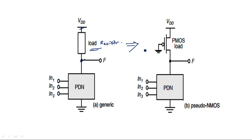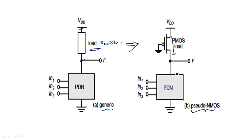This load resistor can be replaced by a transistor — an NMOS transistor with input VDD, a PMOS transistor with input 0, or any depletion mode transistor. One key requirement is that the transistor connected as a load must always be in the on state, operating in the saturation region, so that continuous current flows from VDD to the output. This is the general notation of pseudo NMOS logic.